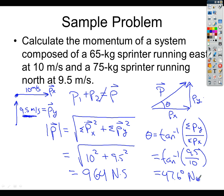And for this it would be north of east, and so our final answer would be 964 newton seconds at 47.6 degrees north of east, and that is a combination of a couple of different momentum that we're trying to add together.